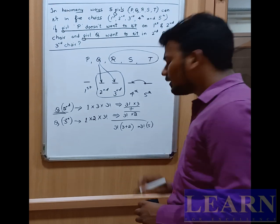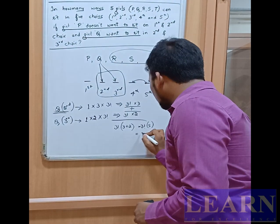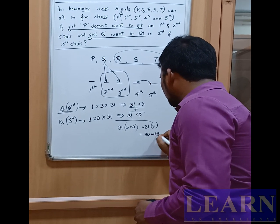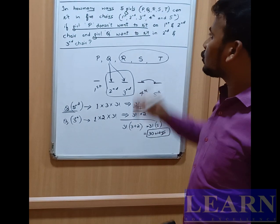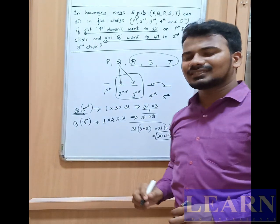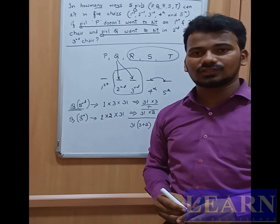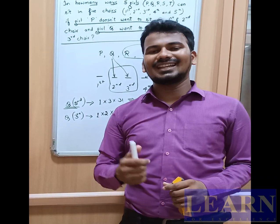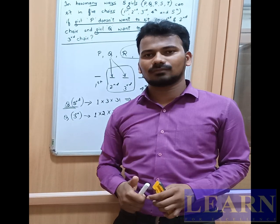Three factorial is 6, so 6 × 5 = 30. Therefore, the five girls can be seated in 30 ways after applying both conditions. Hope you've got the solution — for any doubts, comment in the comment section. Thanks for watching!